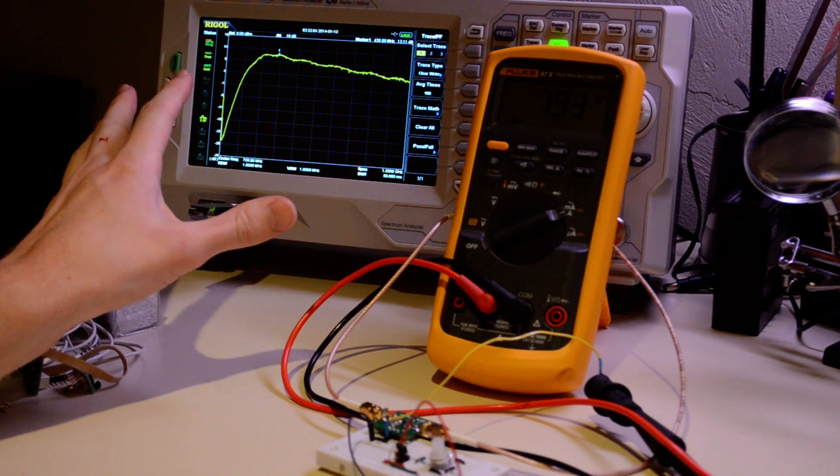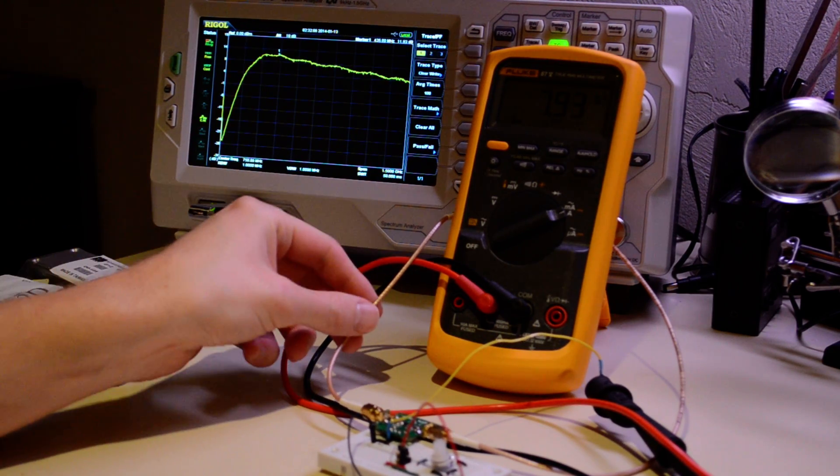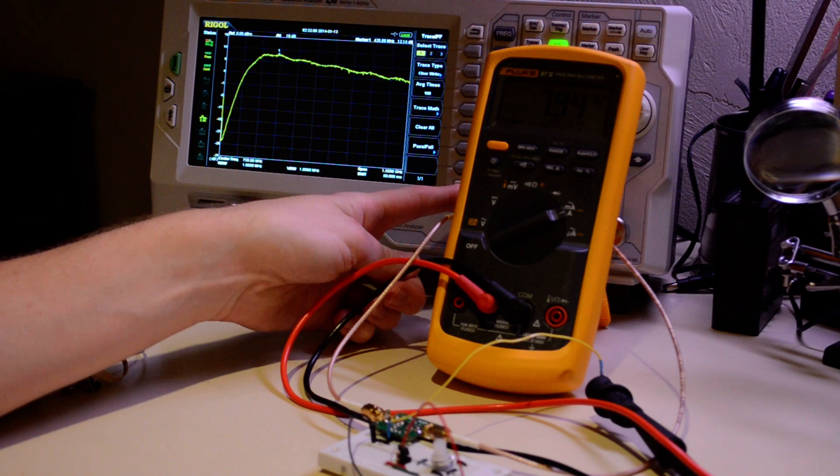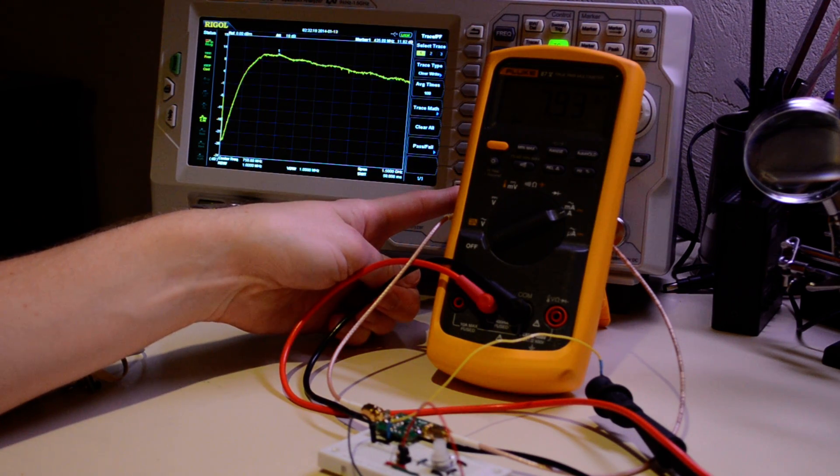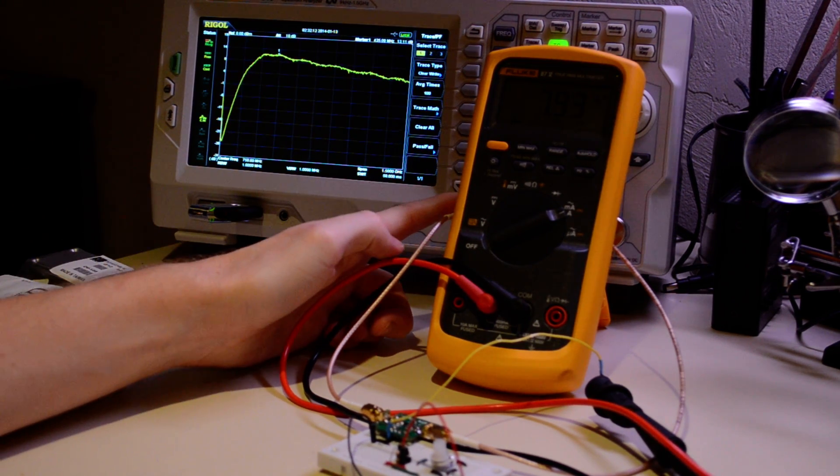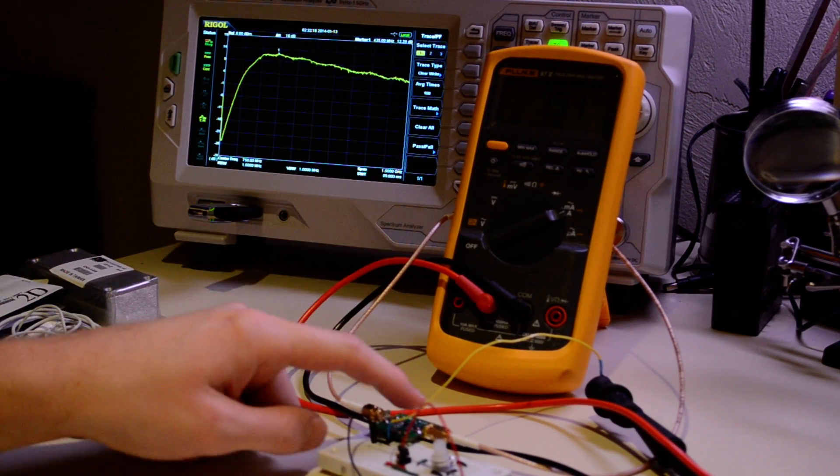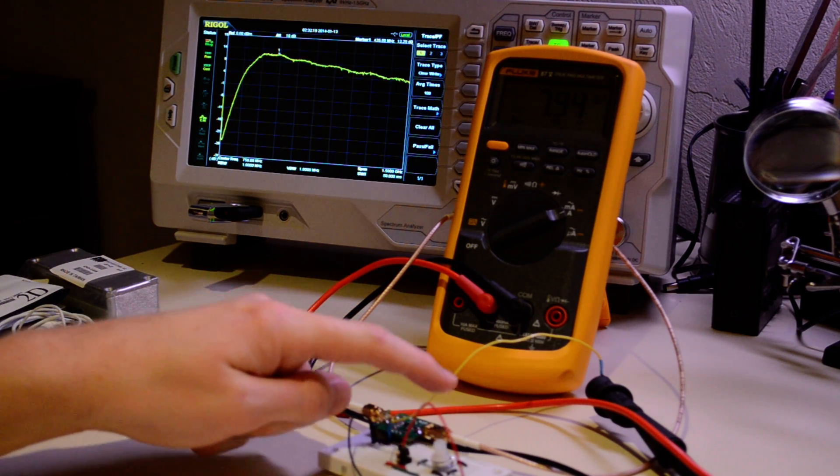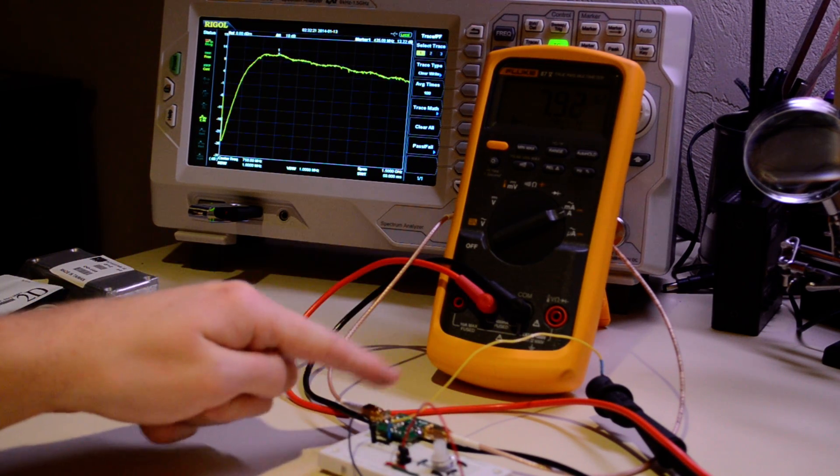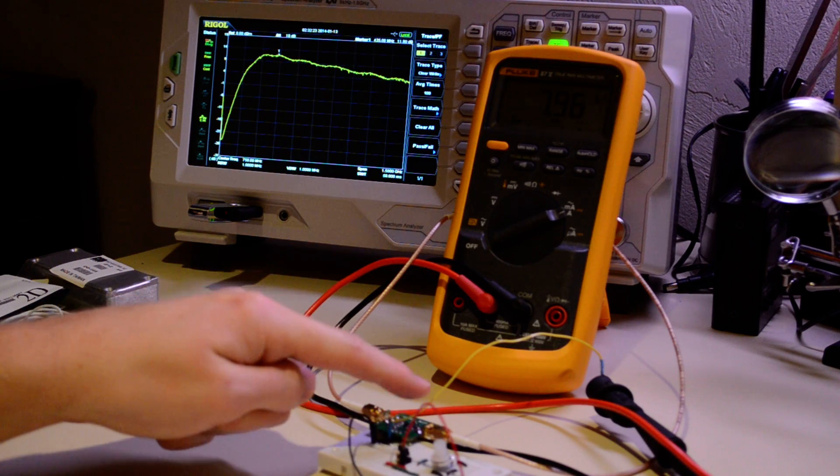I've got negative 20 dBm coming out of the tracking generator, 20 dB of attenuation, so there's negative 40 dBm going into the low noise amplifier. There should be about 20 dB of gain in the amplifier.